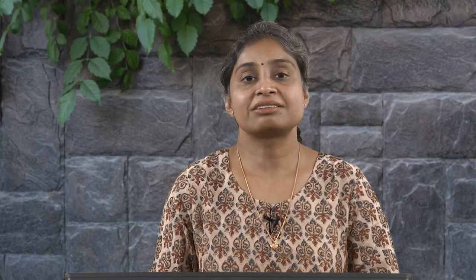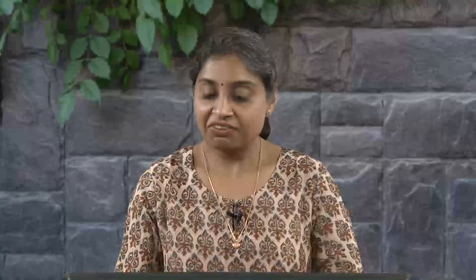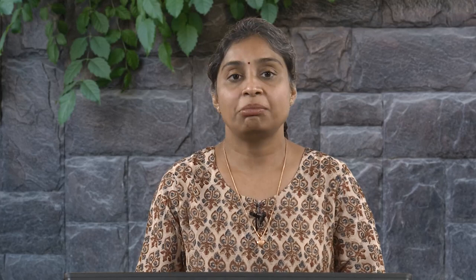The next chapter deals with analysis of slopes in rocks and rock masses. We will first learn about the various modes of failure, then various limit equilibrium approaches for rock slope stability analysis. We will also see the application of stereographic projections to slope stability, and if the slope is failing, what remedial measures can be adopted.